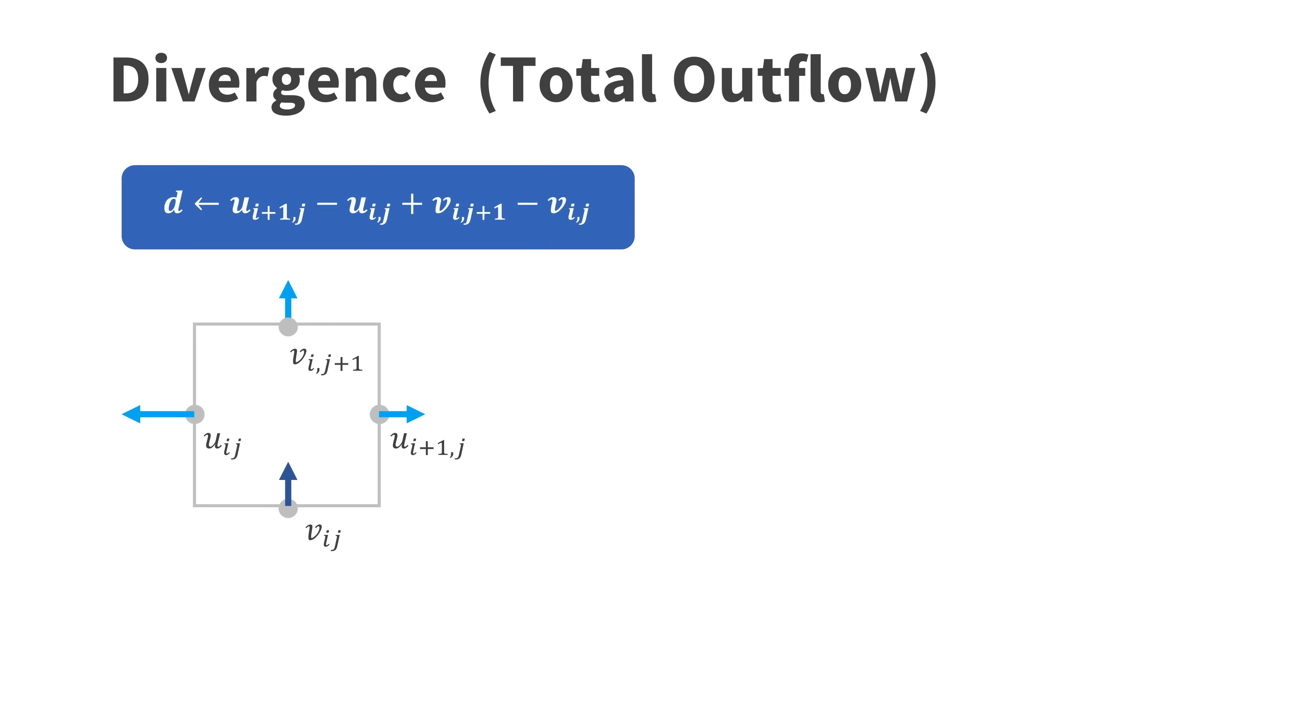In a staggered grid we simply sum up the velocities adjacent to one cell. We need to be careful though. If u on the right is positive, fluid leaves the cell. However if u on the left side is positive, fluid flows into the cell so we need a negative sign there. If the divergence is positive we have too much outflow. If it is negative we have too much inflow. For an incompressible fluid the divergence must be zero.